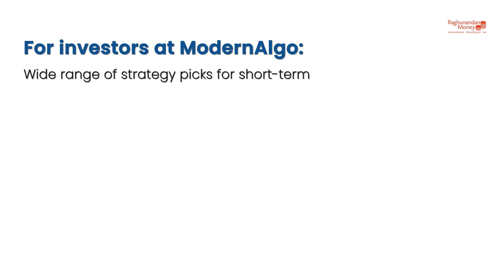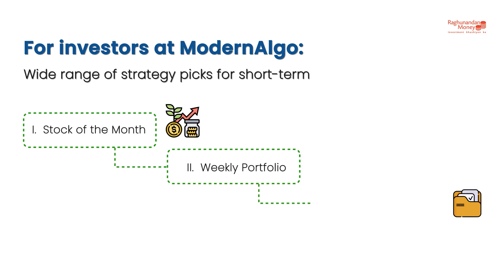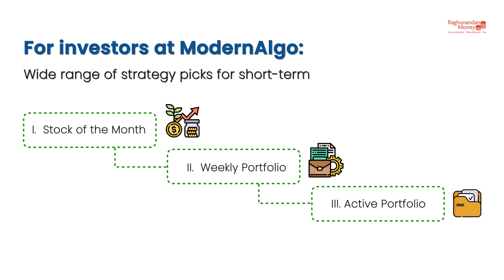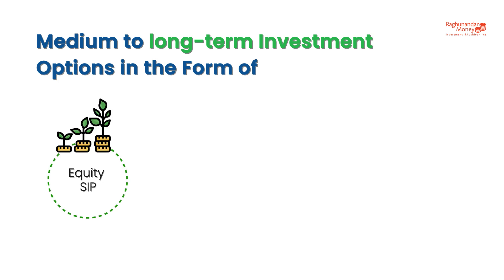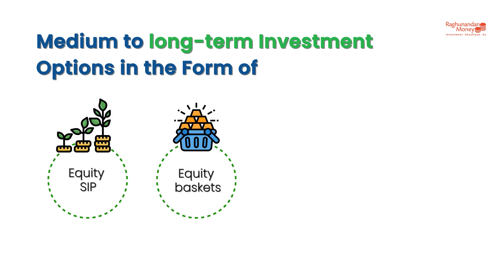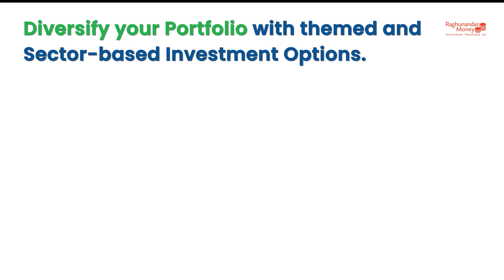For investors at Modern Algo, a wide range of strategy picks for short term: Stock of the Month, Weekly Portfolio, Active Portfolio, and medium to long-term investment options in the form of Equity SIP, Equity Baskets, Theme Baskets, and Algo Baskets.